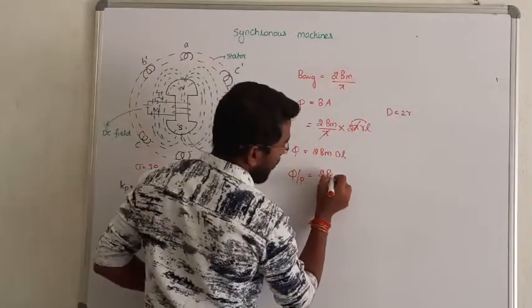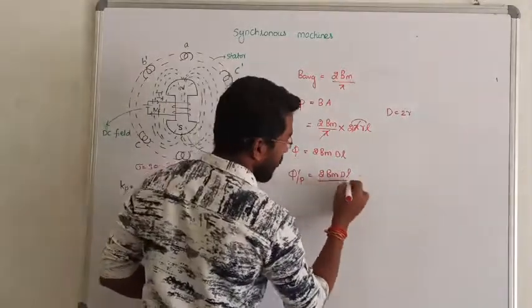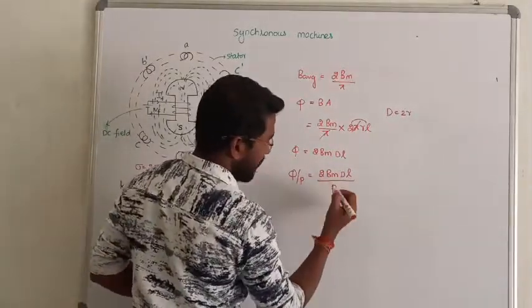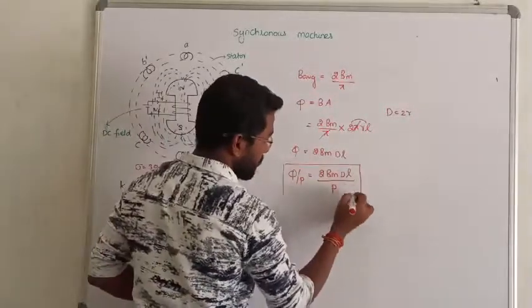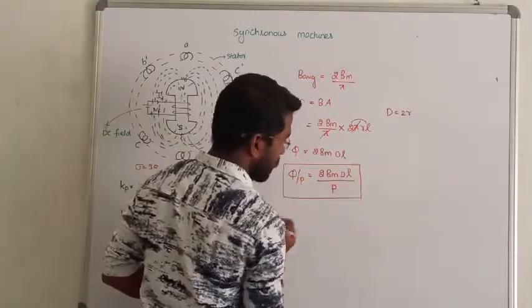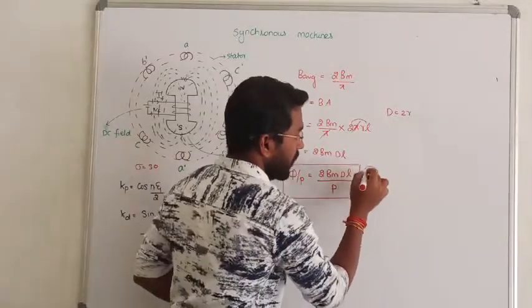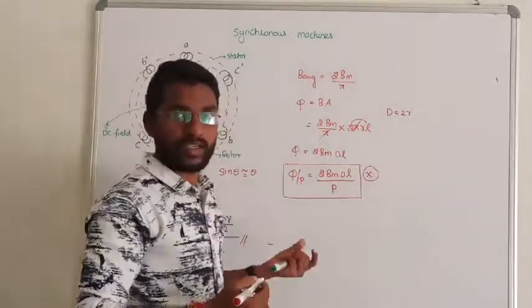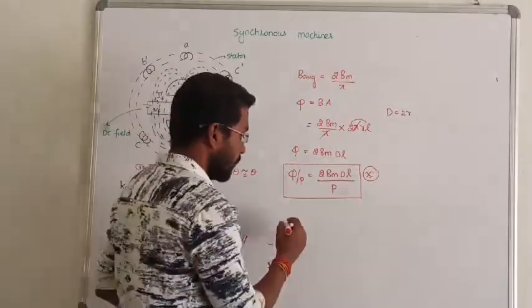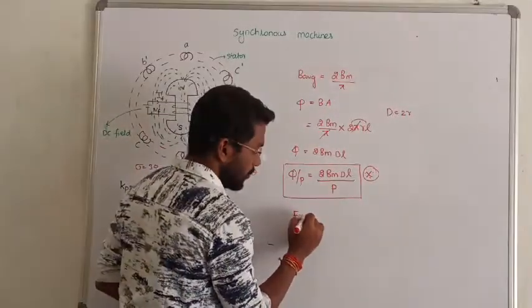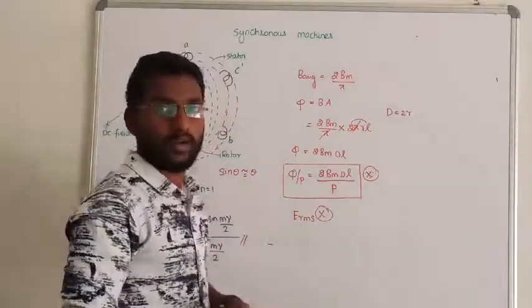Now you can calculate flux per pole - maximum flux per pole. That's 2 times maximum flux density times diameter D times axial length divided by the number of poles P. That's how we calculate the maximum flux generated per pole in synchronous machines.